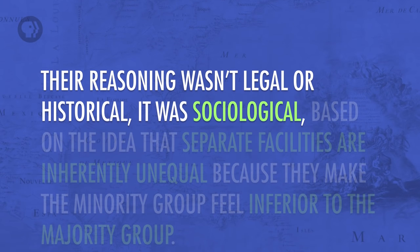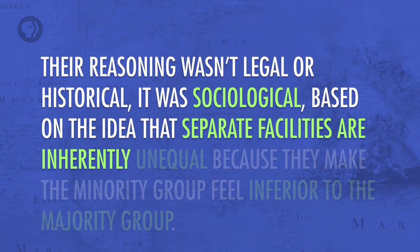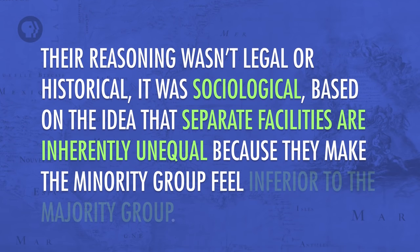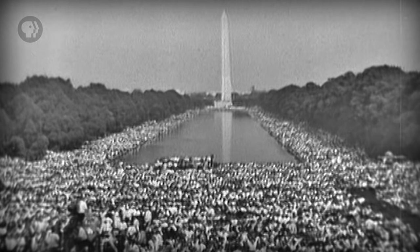The reason wasn't legal or historical — it was sociological, based on the idea that separate facilities are inherently unequal because they make the minority group feel inferior to the majority group. Although the case didn't immediately bring about the end of segregated schools — many states engaged in what they called massive resistance to prevent school integration — Brown v. Board of Education is still a landmark civil rights case. It showed that the federal government could intervene in public education when racial discrimination was involved, and that states couldn't use race as a criterion for setting up public schools. It was the legal basis of the American Civil Rights Movement and provided the foundation for federal civil rights legislation of the 1960s.